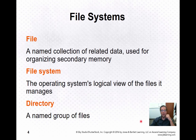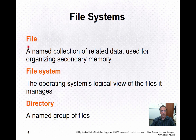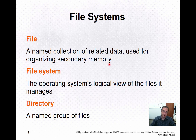To begin with, let's get some terminology out of the way. We're talking about file systems, so let's get some words down. A file is just a named collection of related data, and it's used for organizing secondary memory. Secondary memory refers to persistent memory — the memory that survives after you turn your computer off and turn it on again. More specifically, we're talking about disks.